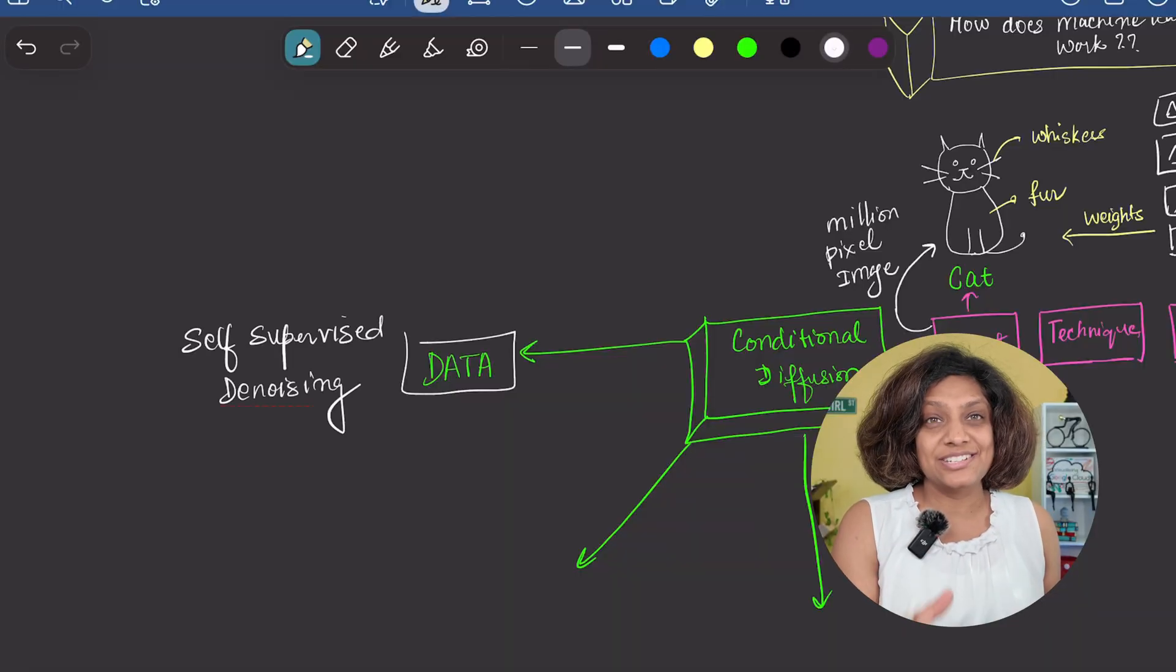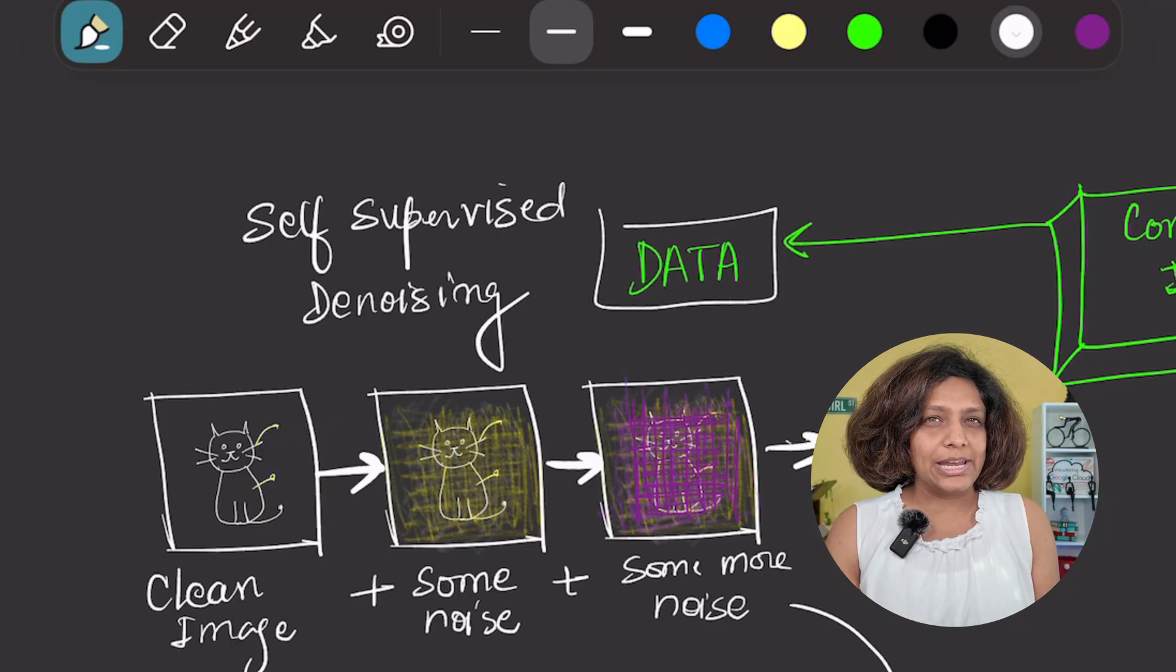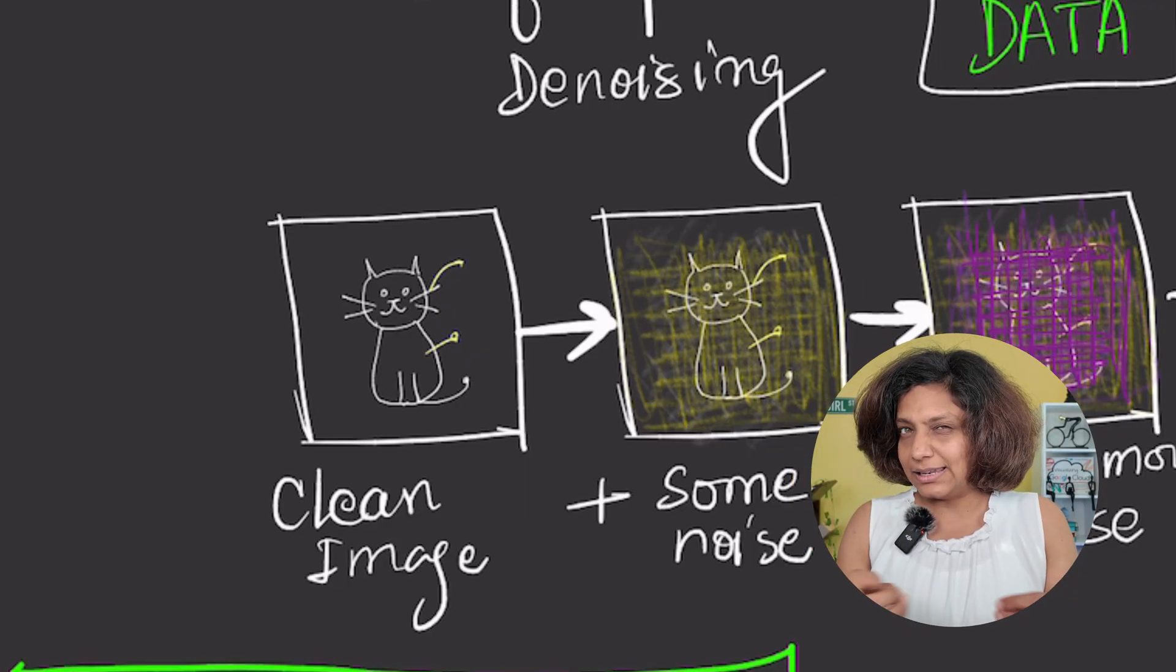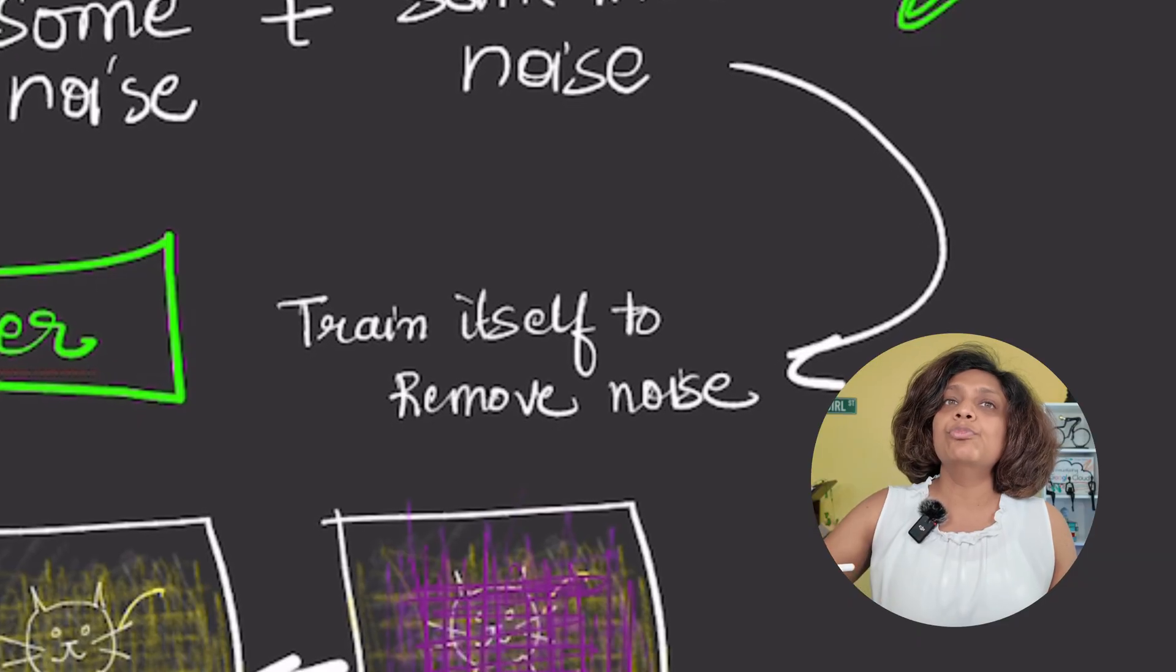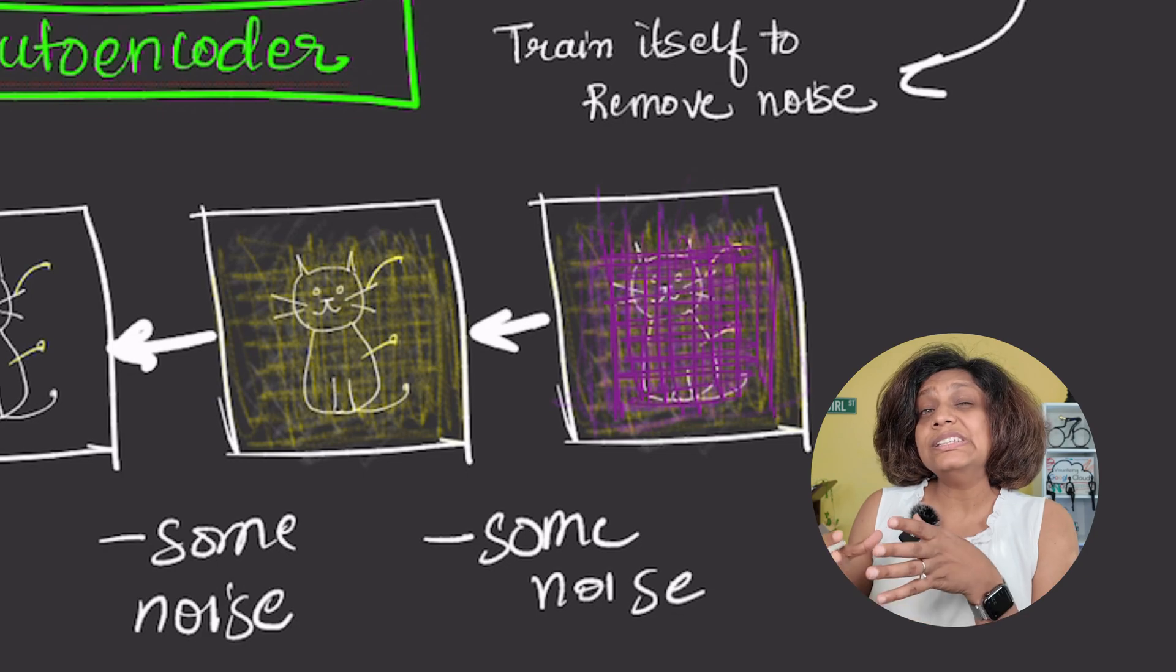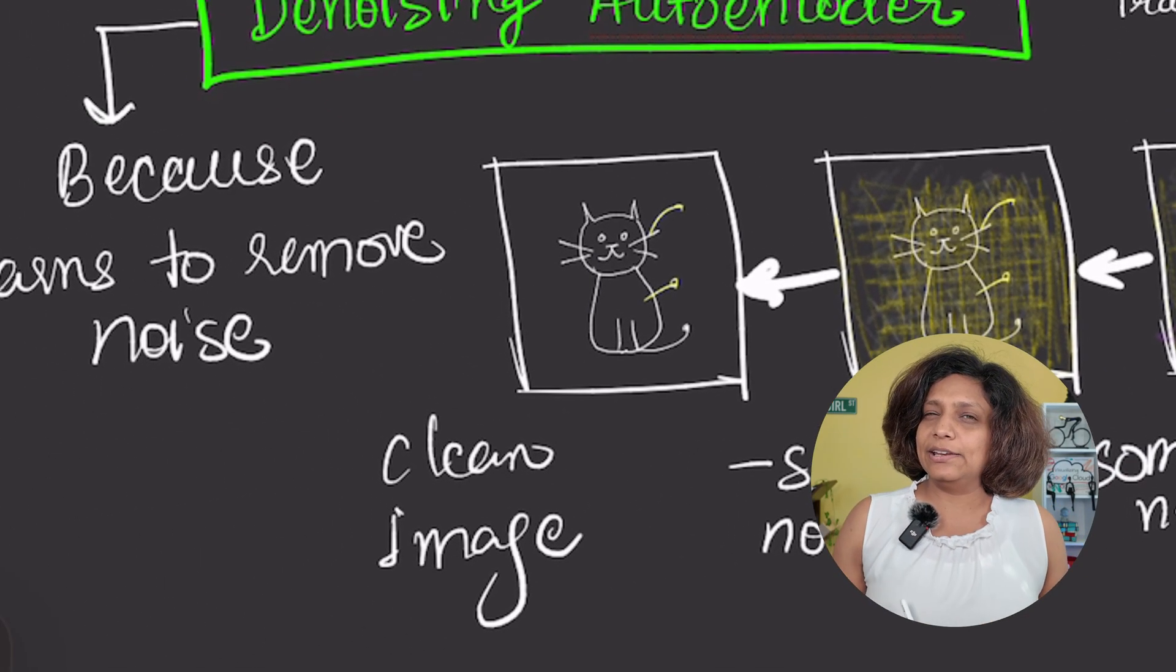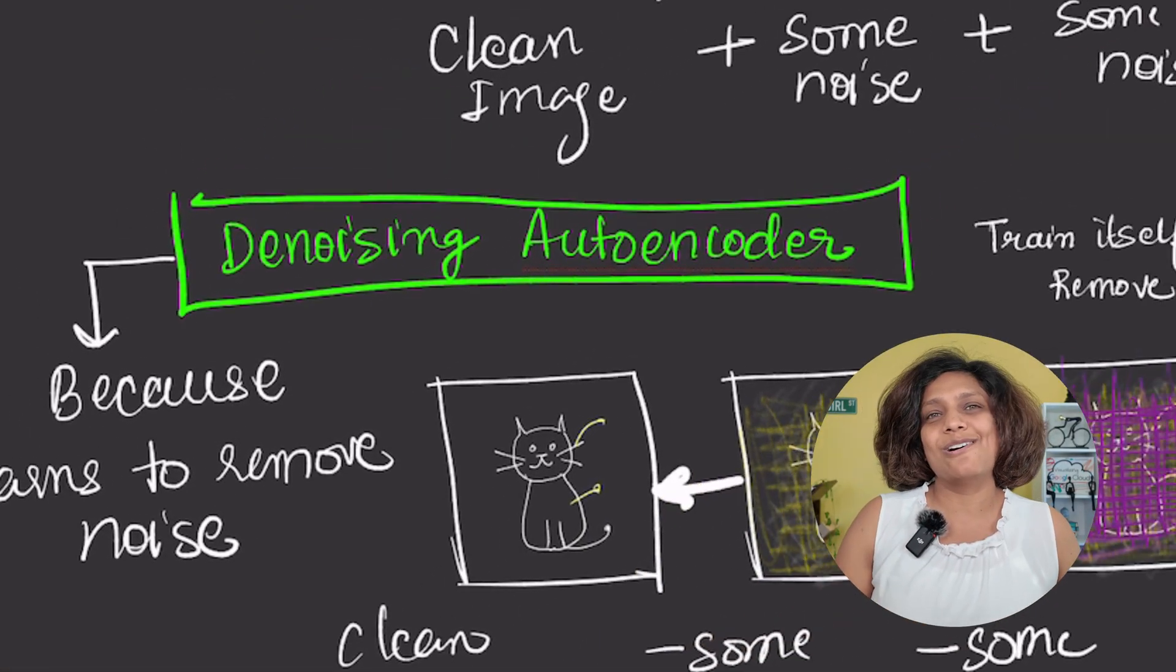So diffusion models use a trick called self-supervised denoising. It's very simple. The model creates its own training data. It takes a clean image, intentionally adds a little bit of noise to it, and then trains itself to remove that noise. The noisy image is the input, and the original clean image is the output.